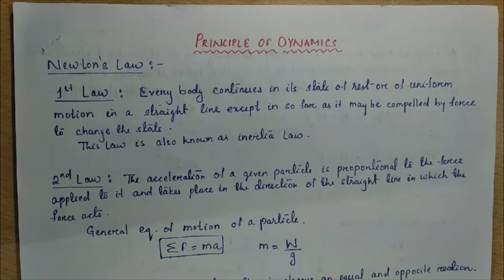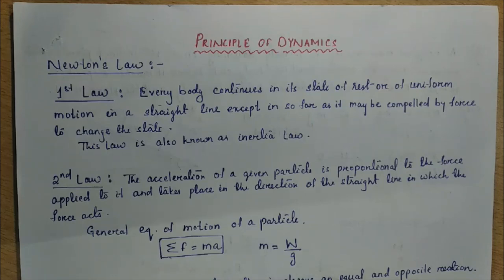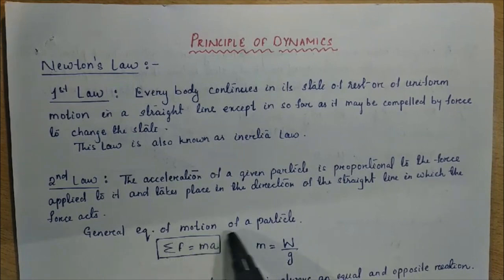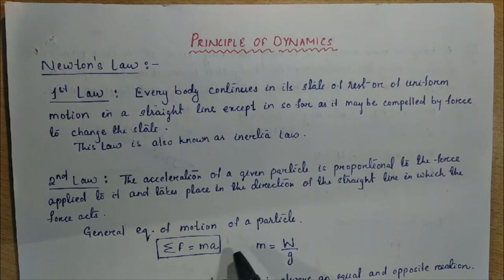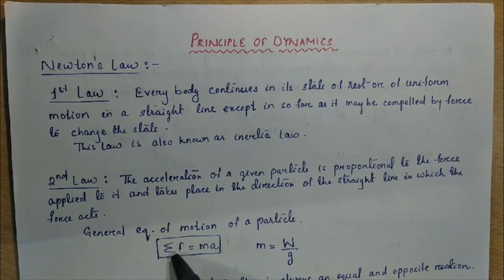Newton's second law states that the rate of change of momentum is directly proportional to the impressed force and takes place in the same direction in which the force acts. According to the second law, the equation of motion of a particle is: summation of F equals M times A. This is the important expression — summation of F equals MA.